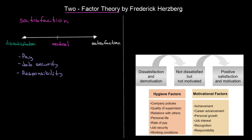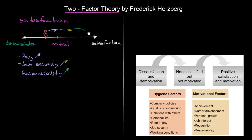If an employee is slightly dissatisfied — somewhere on the left side of our axis — and we would increase the pay, our presumption is that this employee would move to the right. If we increase job security, again the employee would move a little bit to the right. And if we increase responsibility, we would again have some movement towards satisfaction. This is how we usually think about job satisfaction.